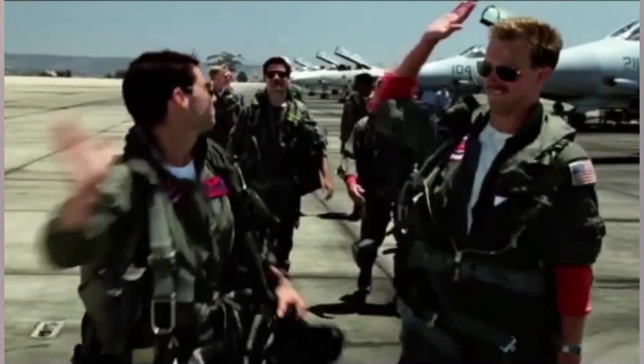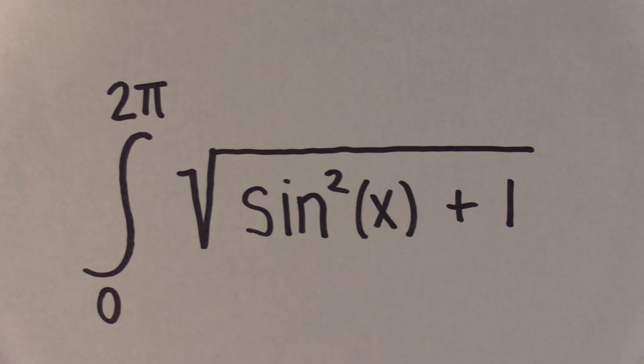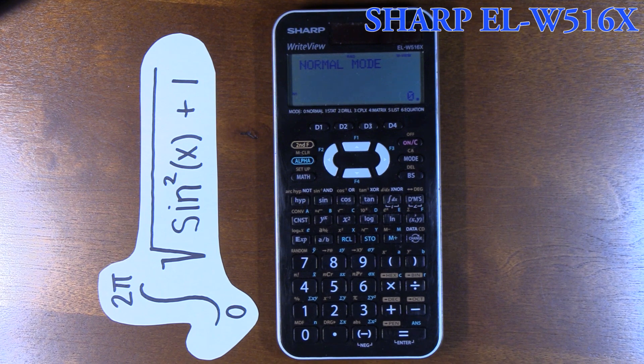speed matters. The integral we're going to use is the integral from 0 to 2π of the square root of sin²(x) + 1. And we need to make sure our calculator is in radians.